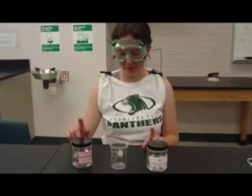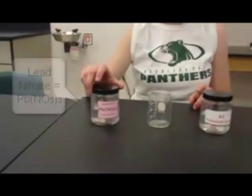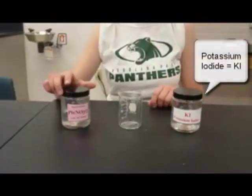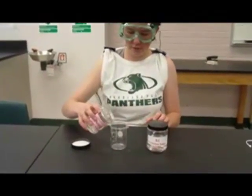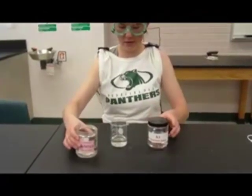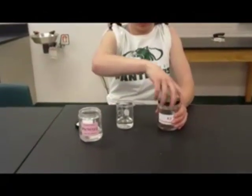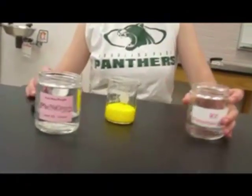We're going to do another chemical change. This one we're going to mix lead nitrate and potassium iodide. And it's going to form a yellow precipitate, which will also change the color.